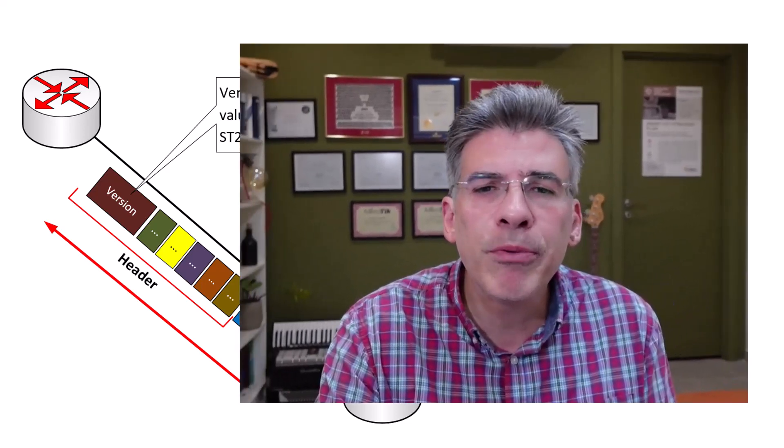Now, the Internet Stream Protocol was only experimental in nature, and it was never actually introduced for public use. However, many of the concepts available in ST2 are similar to other technologies that later emerged, including asynchronous transfer mode, or ATM, as well as multi-protocol label switching, or MPLS. ST2 was also a precursor to Voice over IP, although it was never directly related with this technology.